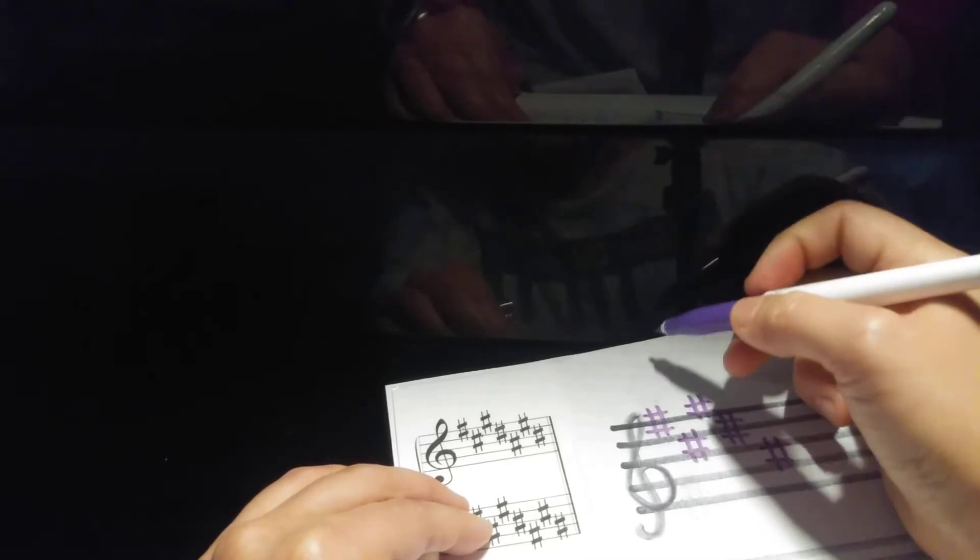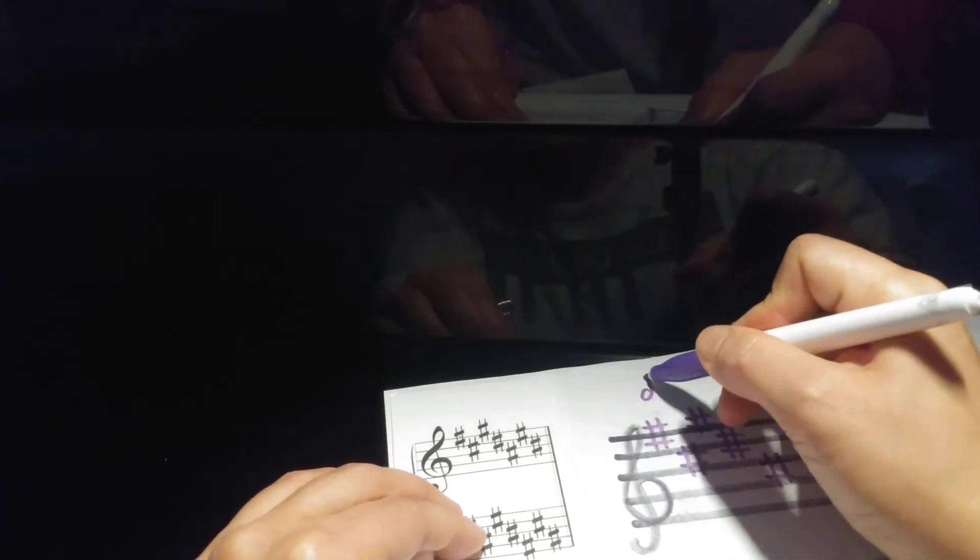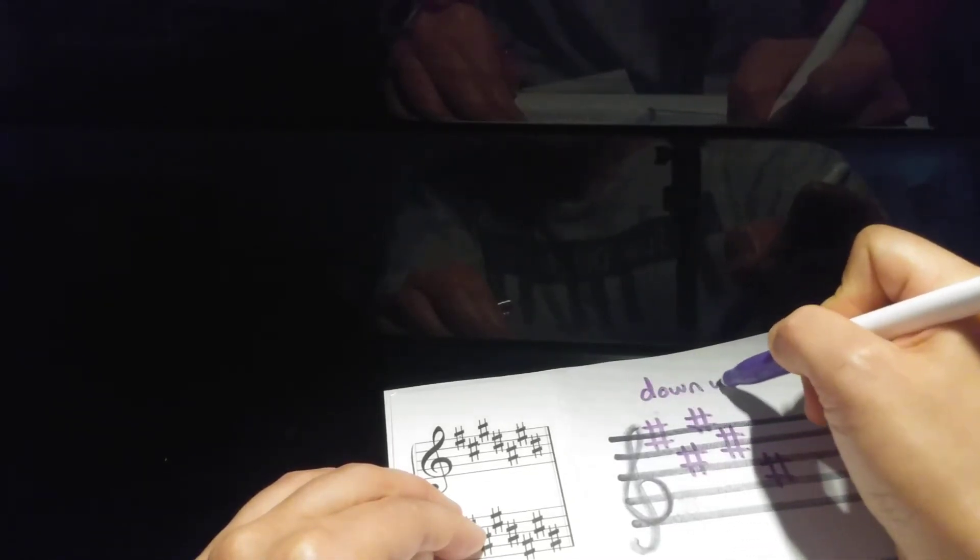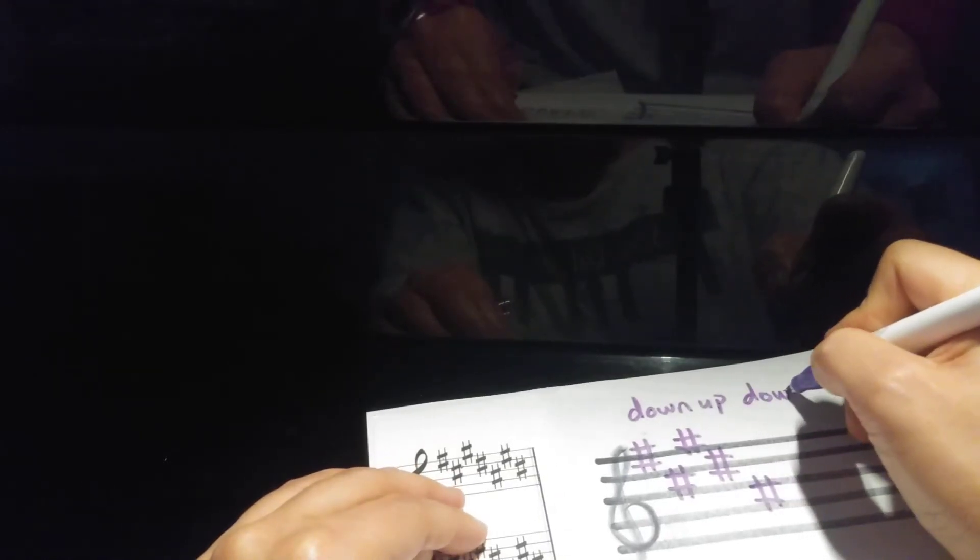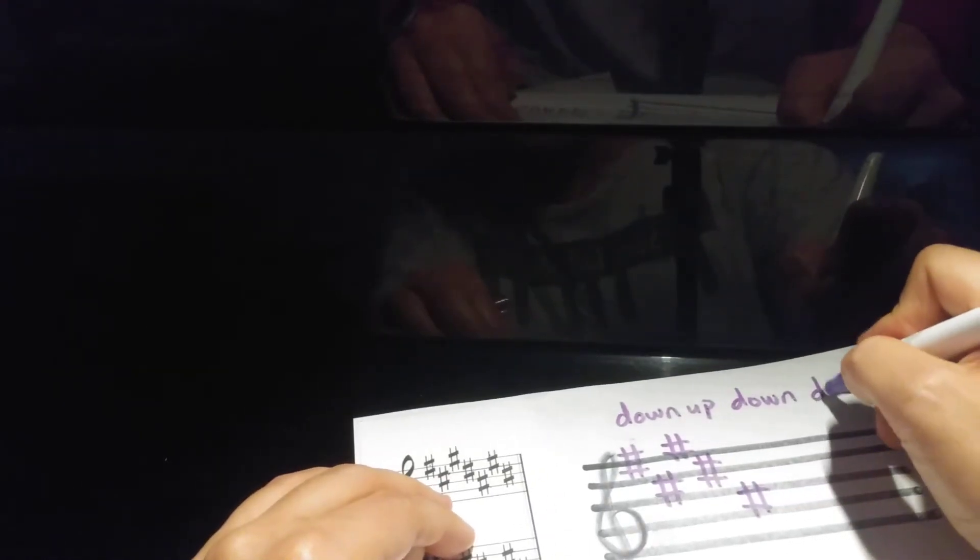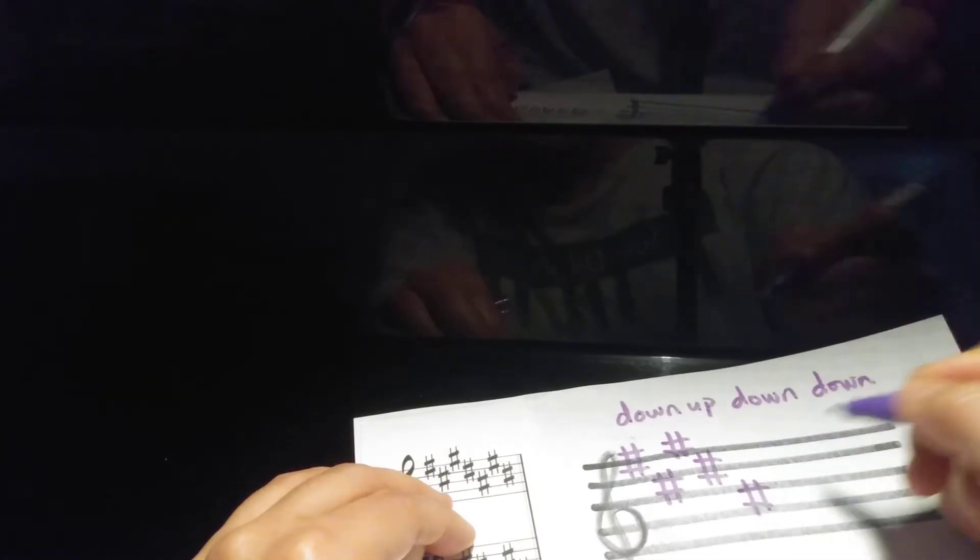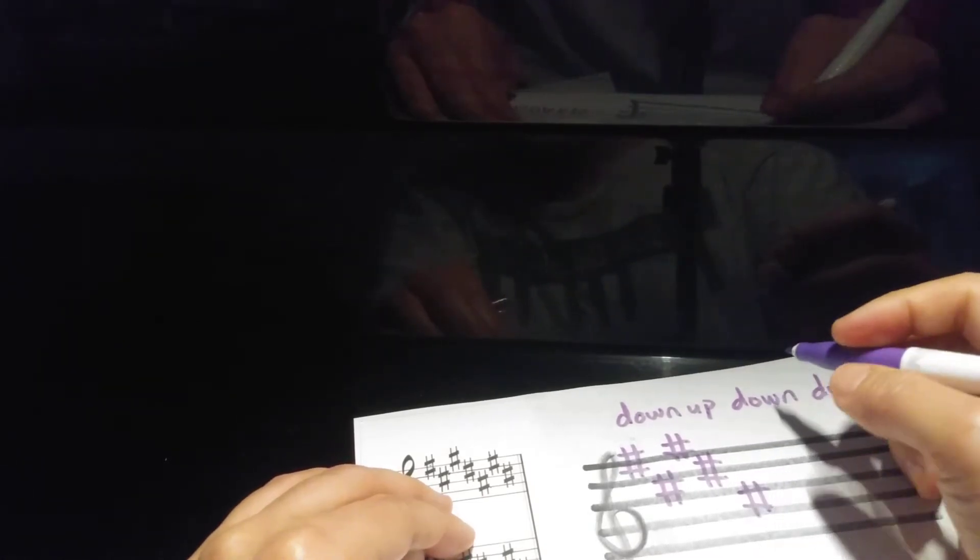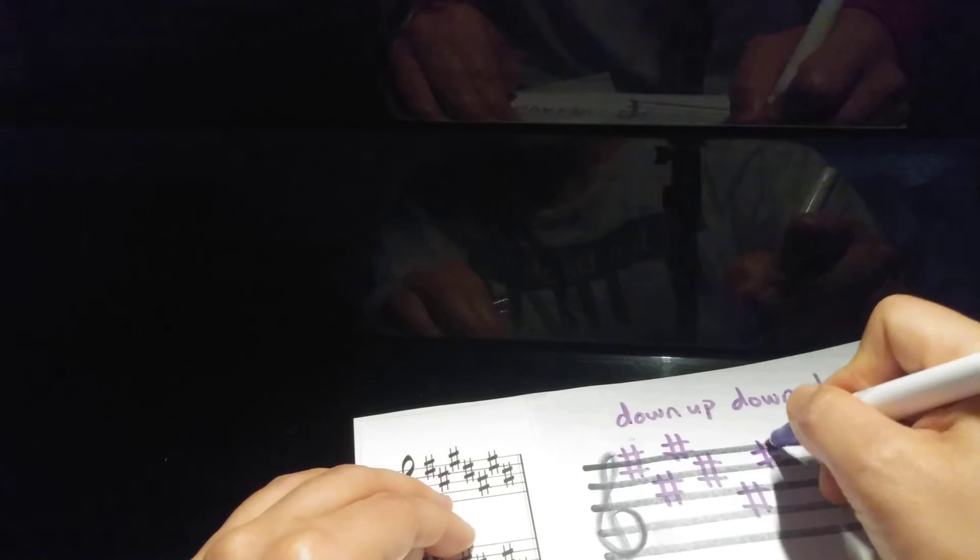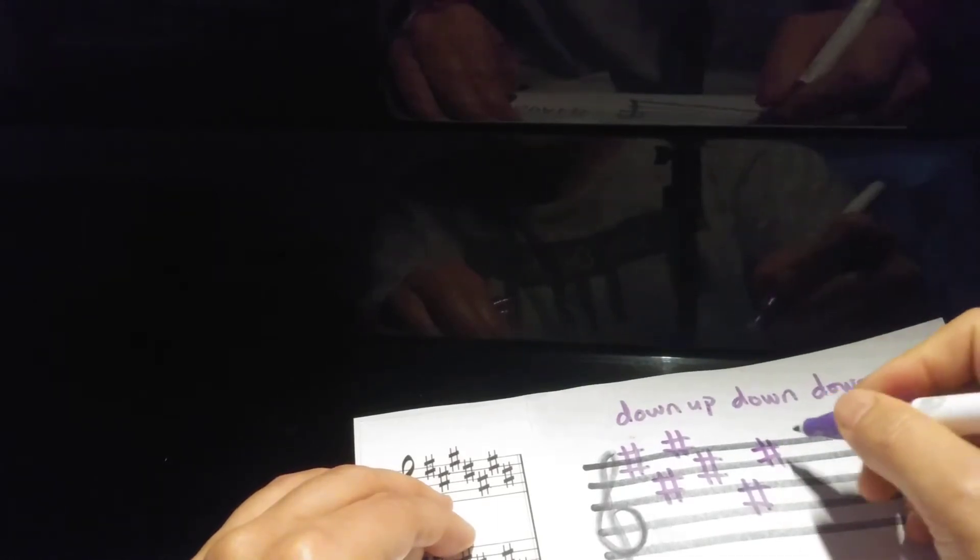So basically what you have is first you go down, then you go up, then you go down. After the word down, you go down again to this A. Then you continue to go up.